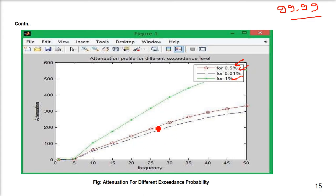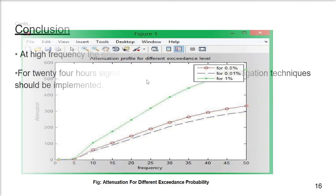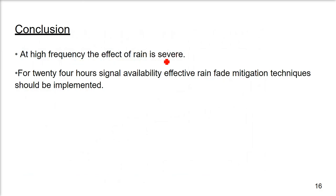What do we conclude? At high frequency, the effect of rain is very severe. We have to compute this. We cannot just subtract EIRP plus antenna gain minus free space loss. We have to subtract the rain attenuation also. You can leave fog, etc., but rain attenuation is substantial, is significant. For 24 hours signal availability, effective rain fade mitigation techniques should be implemented. Mitigation techniques will come with some cost for the extra resources being employed. This was just a basic idea about rain attenuation and how you have to go. Thank you so much, take care.